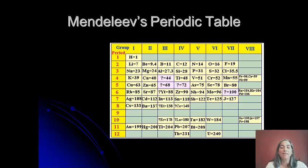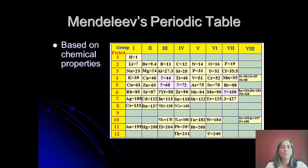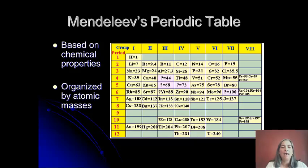You can see there were a lot fewer elements then — around 60 — and you can see there are some question marks. We'll talk about those in just a minute. He based it on chemical properties and the repetition of those chemical properties, and he organized those into columns. He also put them in order by atomic mass, which we'll get into further in just a minute.